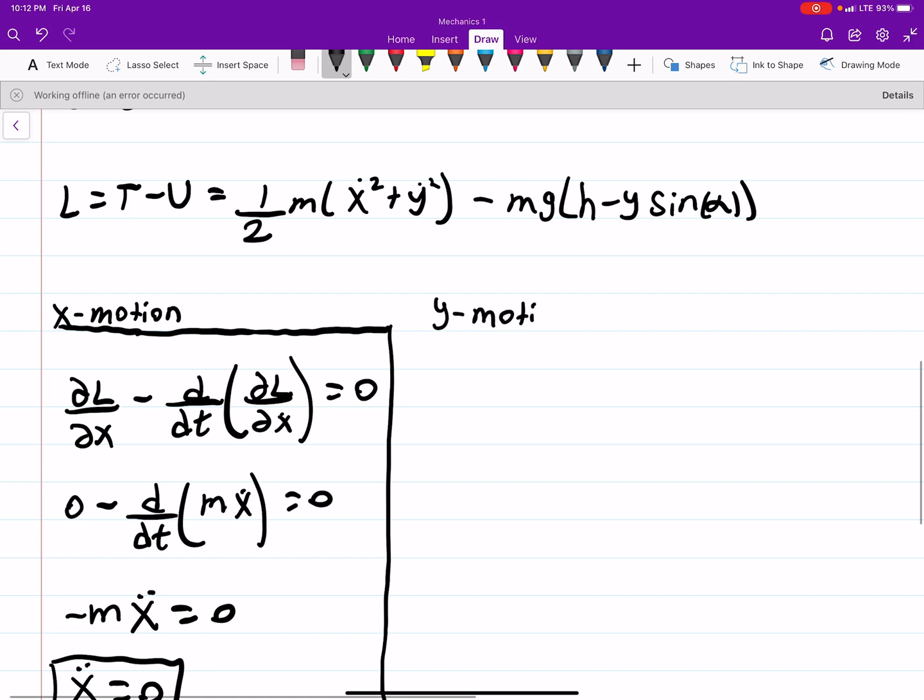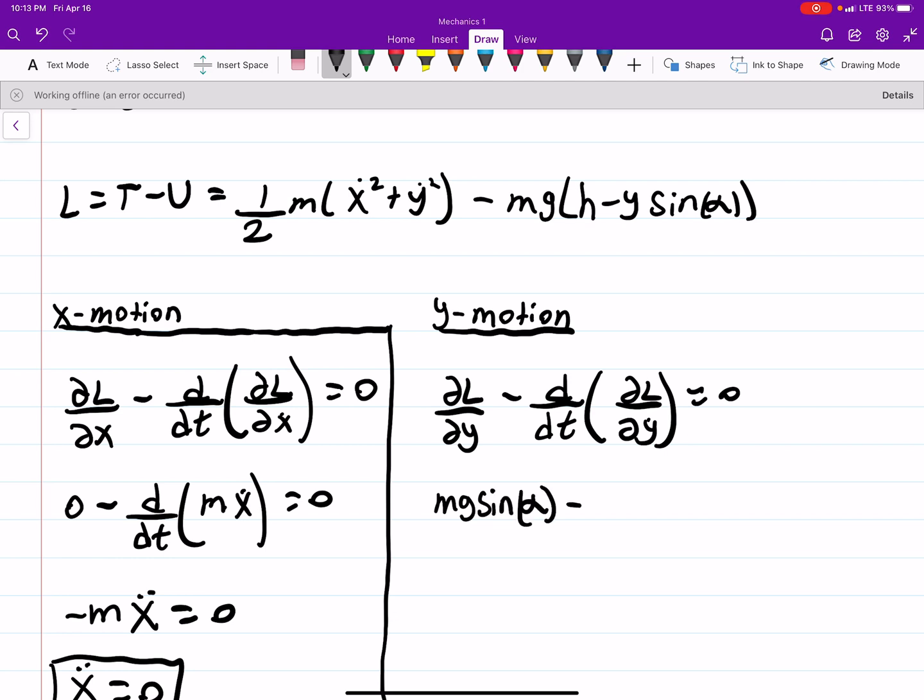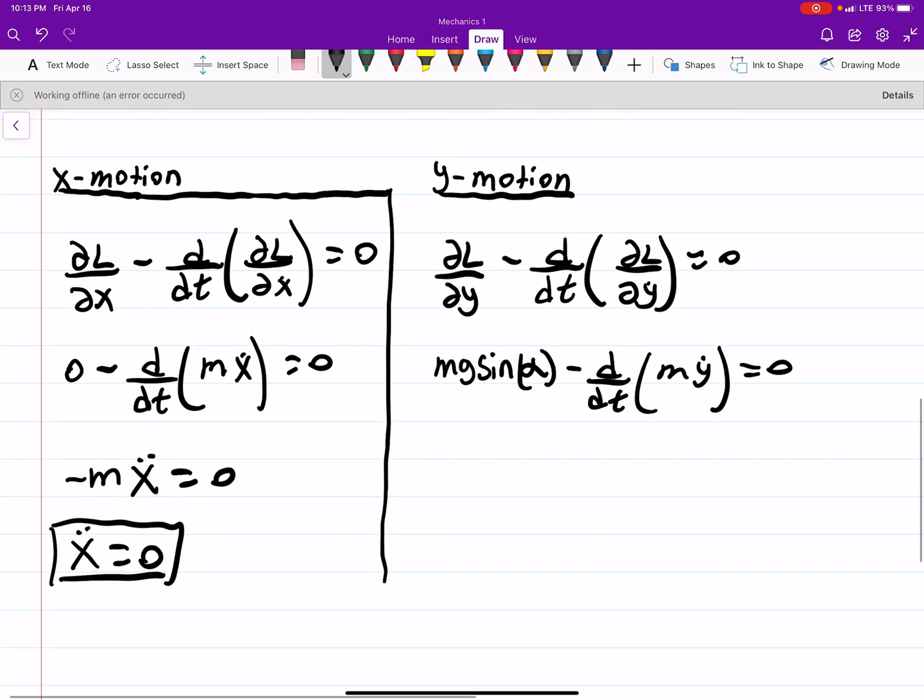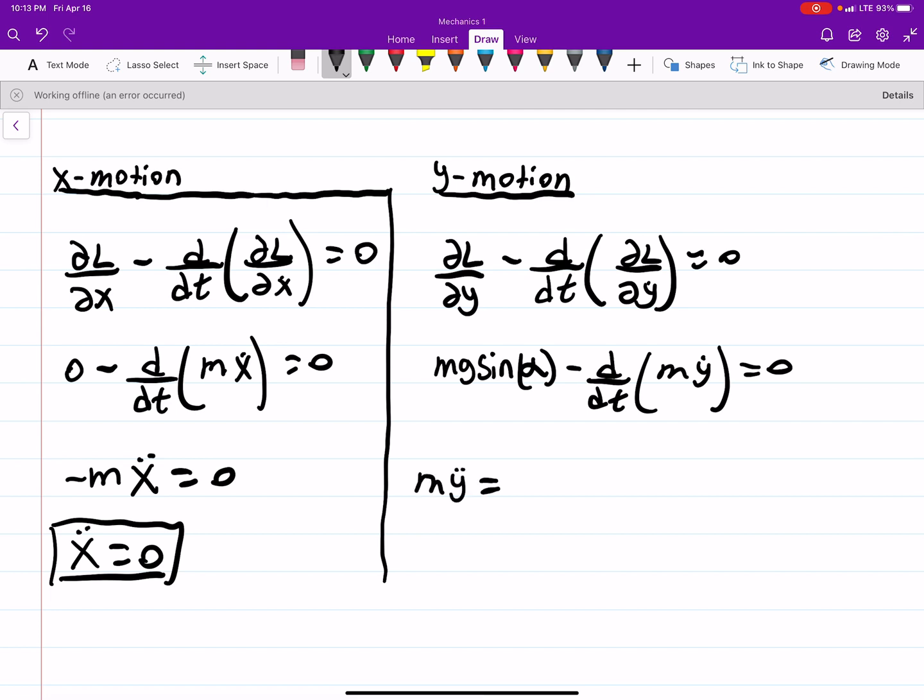And the second part is the y motion. A little more to it. So we have dL by dy minus d by dt dL dy dot equals 0. And now when we do that we can see that we can get an mg sine alpha because with the derivative the y goes away, minus d by dt m y dot equals 0. Or m y double dot equals mg sine alpha. You can divide out by the m's, and y double dot is then just equal to g sine alpha.